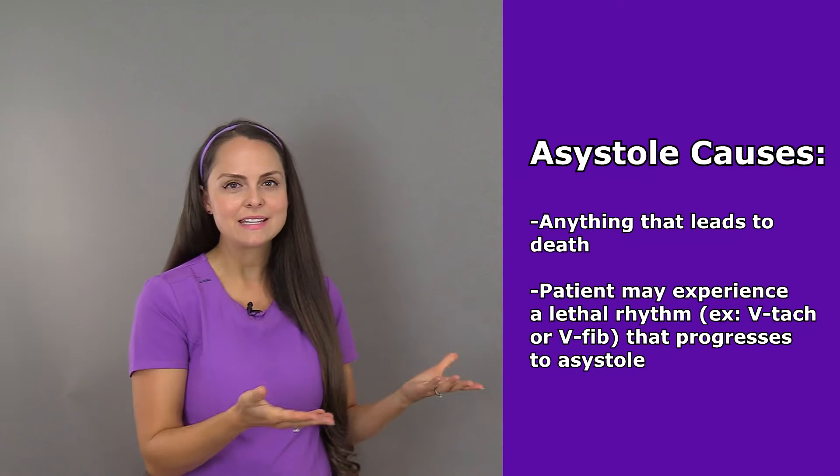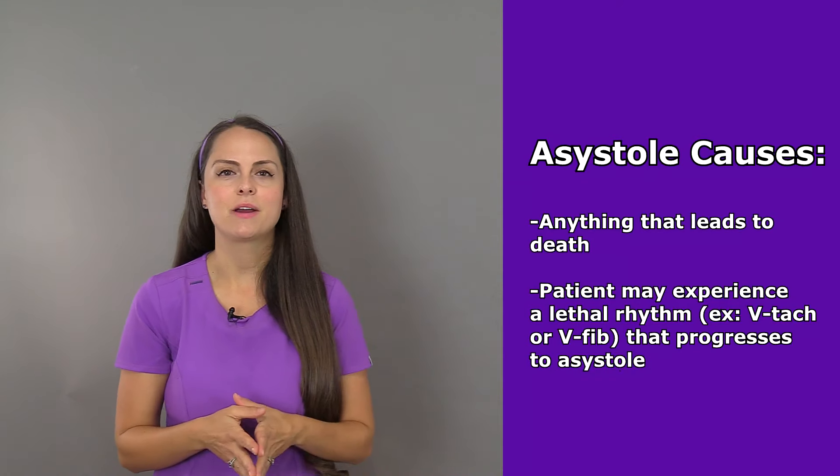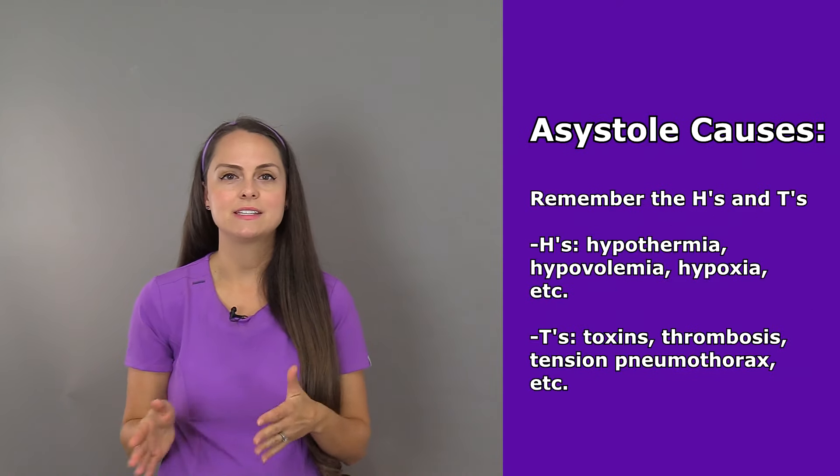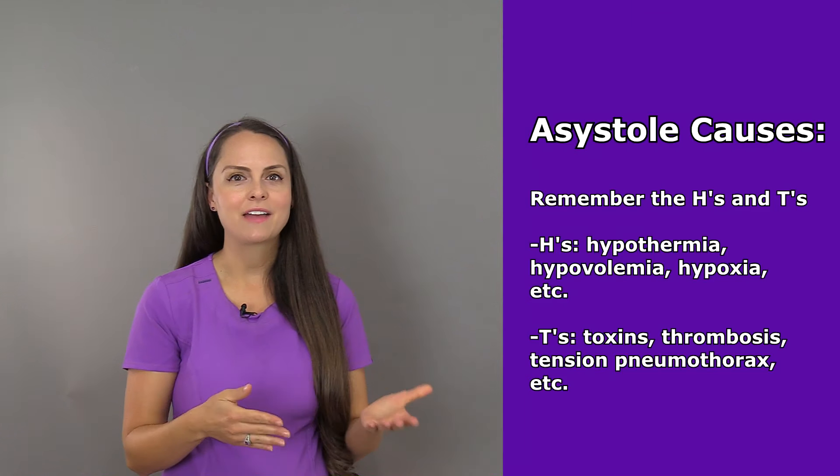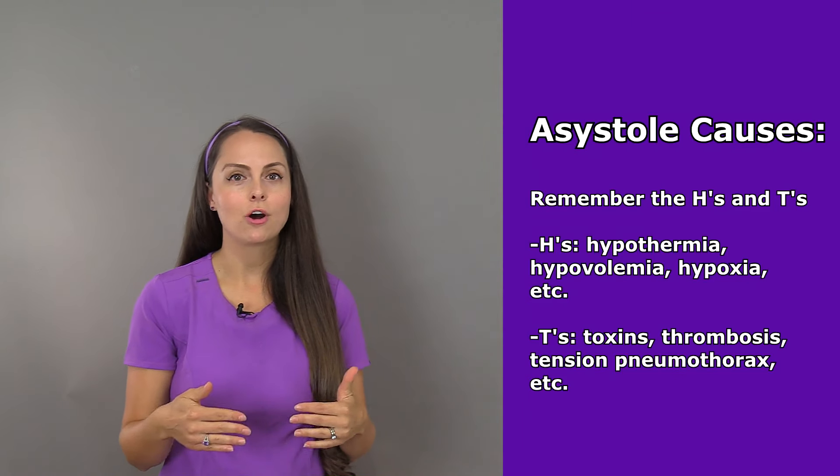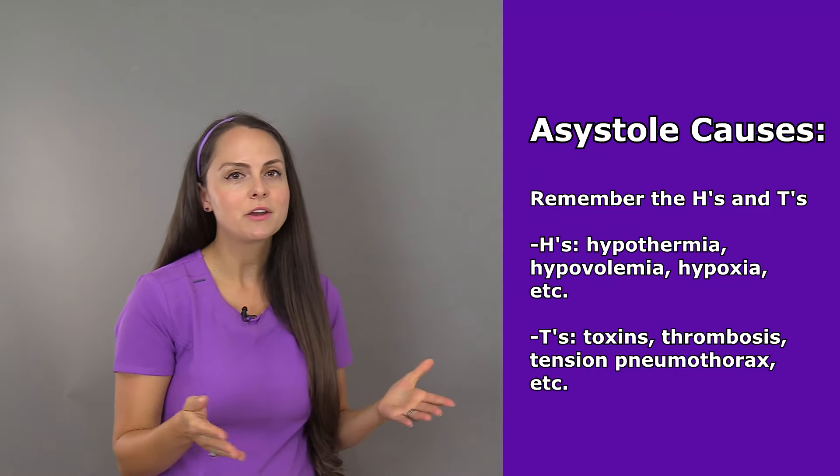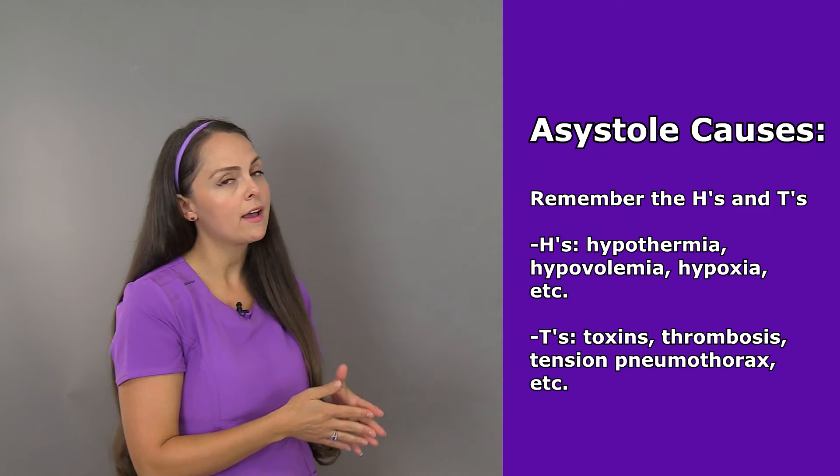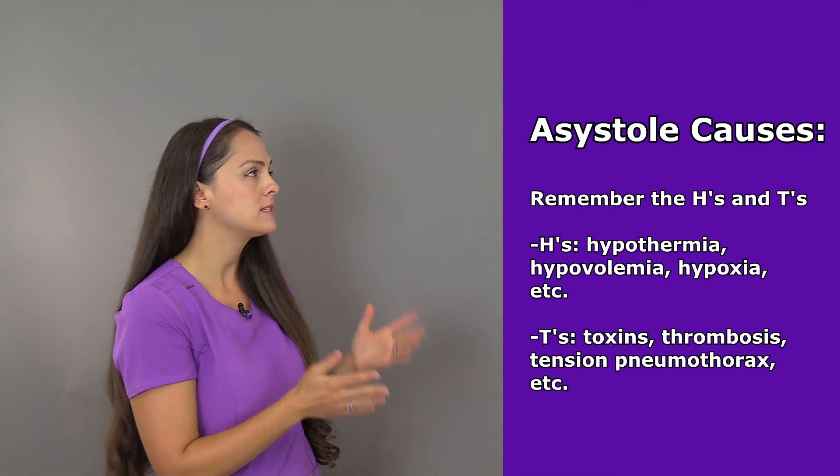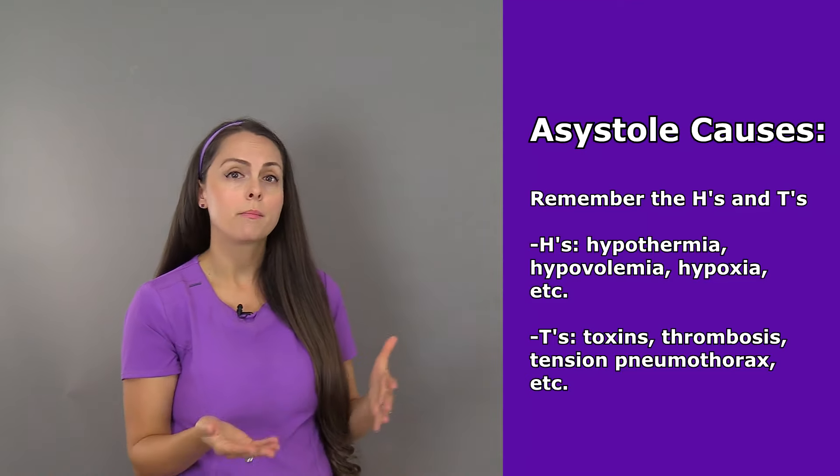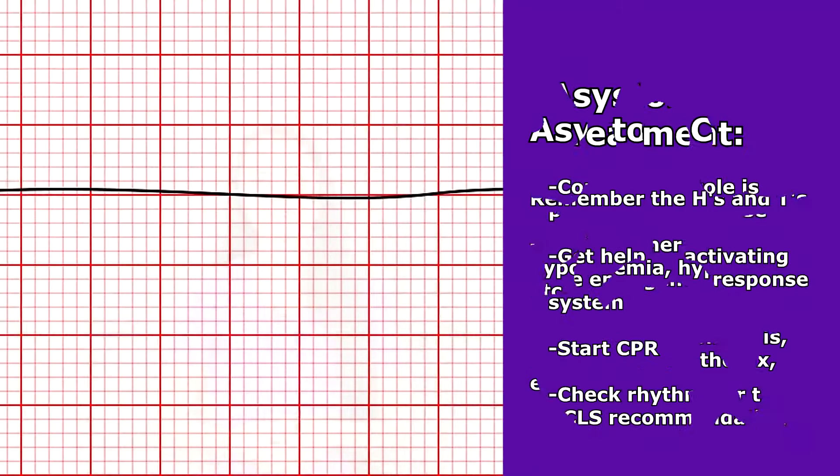Whenever we take ACLS to help prepare us for these situations, we're taught the H's and the T's. You want to be looking at those H's and T's as potential causes for this rhythm. Some of those include hypothermia, hypovolemia, hypoxia, toxins, thrombosis, tension pneumothorax, and so forth.